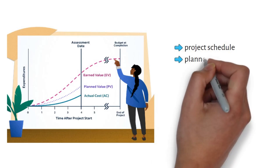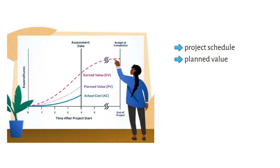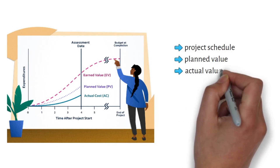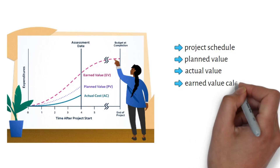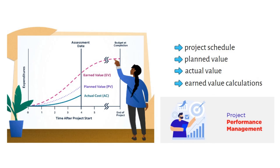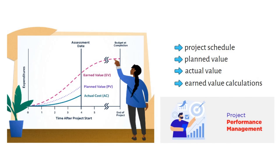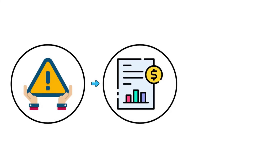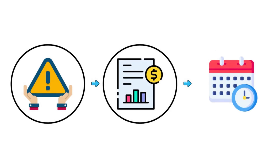Earned Value is a powerful technique that provides project information with the help of project schedule, planned value, actual value, and earned value calculations. It is widely used by stakeholders to understand the real performance of the project. Earned Value Management provides an early warning system for project teams regarding issues affecting the budget and schedule.